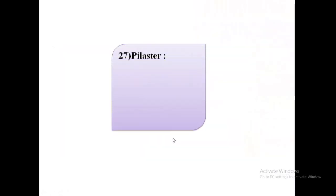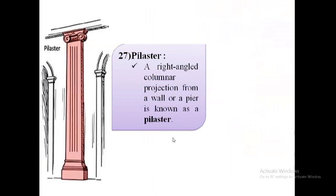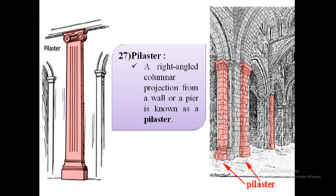The next term is pilaster. A right-angle columnar projection from a wall or a pier is known as a pilaster. As shown in the image, these are the pilasters, which are right-angle columnar projections from a wall or a pier.